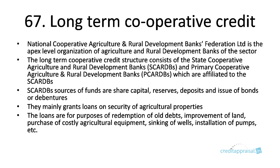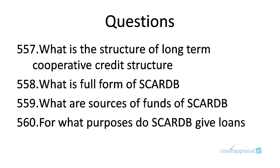Long-term cooperative credit is another topic. The apex-level organization for agriculture and rural development banks is the National Cooperative Agriculture and Rural Development Banks Federation. The long-term cooperative credit structure consists of SCARDBs and PCARDBs, which are affiliated to SCARDBs. SCARDBs' sources of funds are share capital, deposits, and issue of bonds. They mainly grant loans on the security of agricultural properties — for purposes such as redemption of old loans, purchase of land, improvement of land, agricultural equipment, sinking of wells, and installation of pumps.